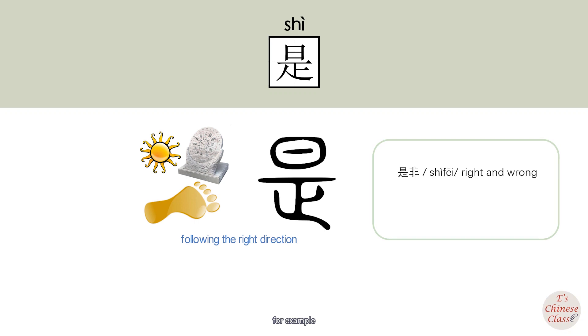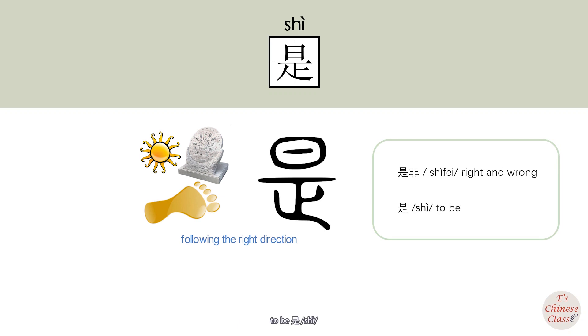For example, 士非 means right and wrong. The extended meaning is to be 士.